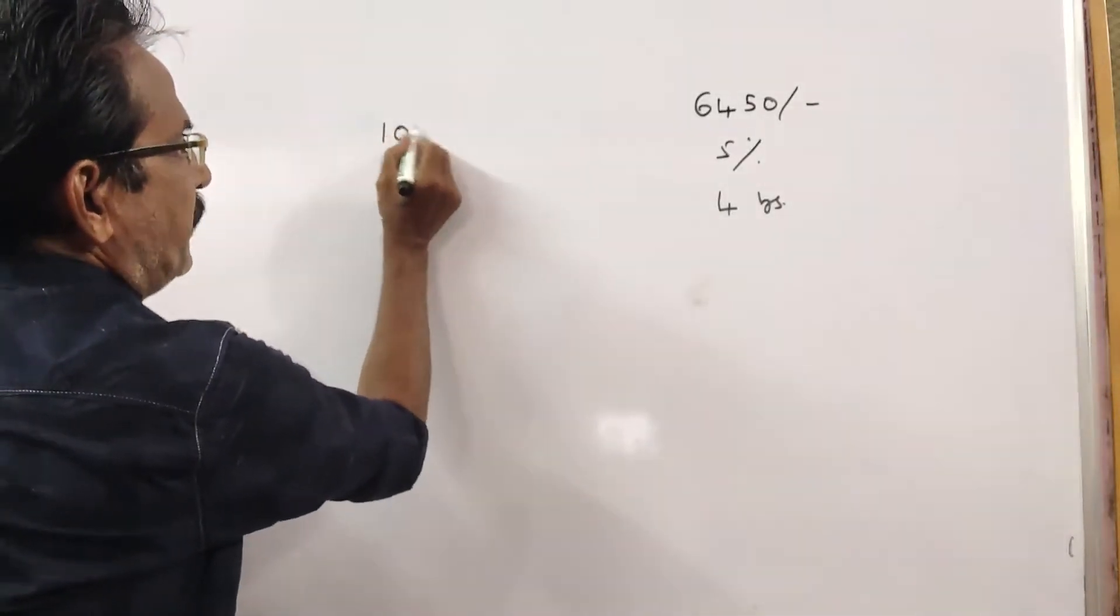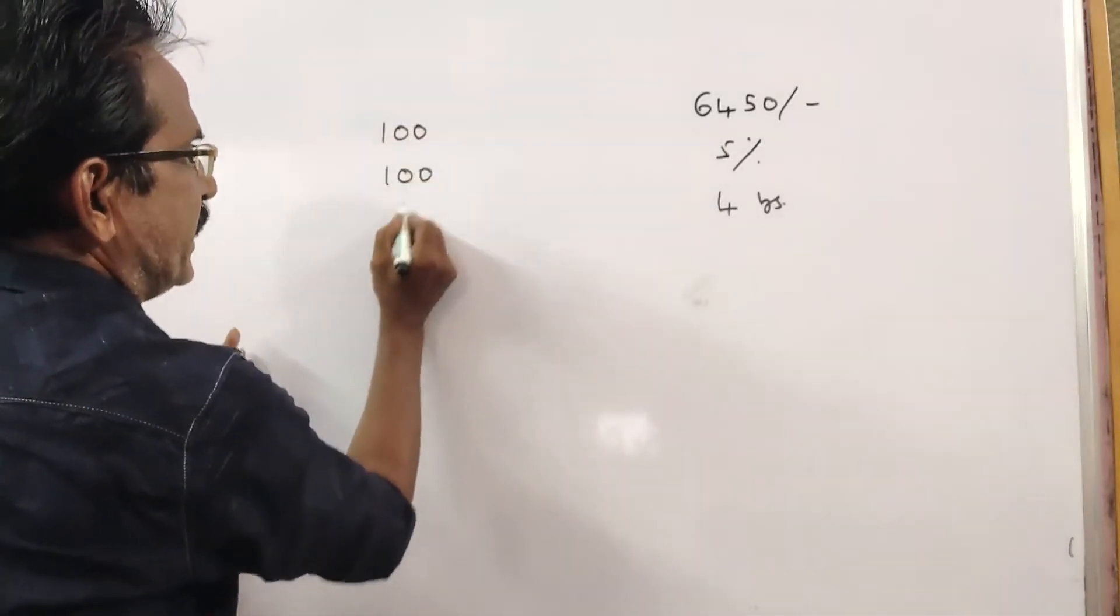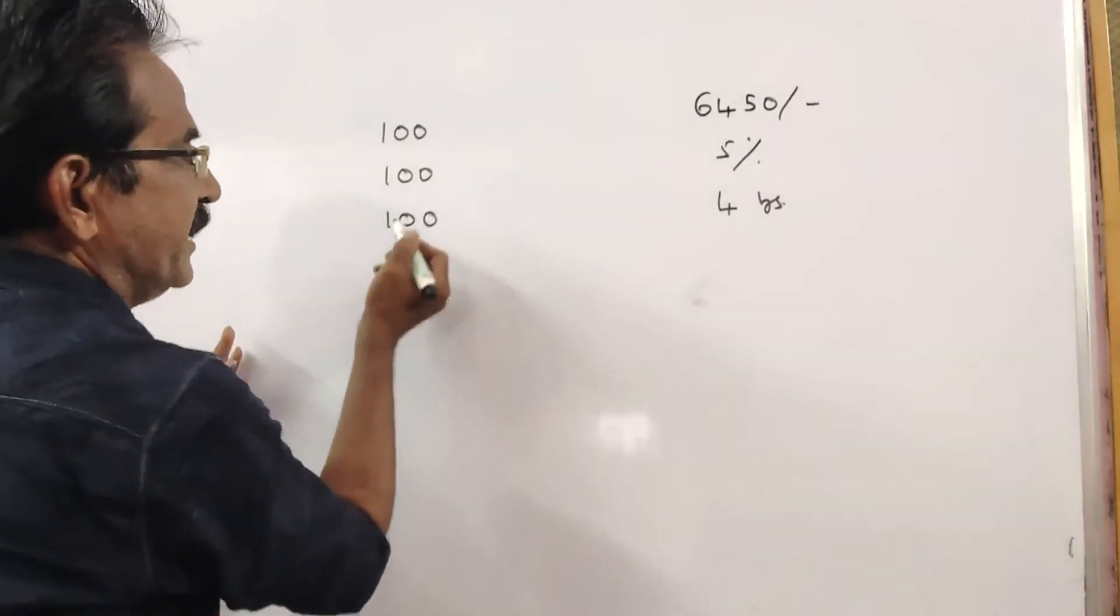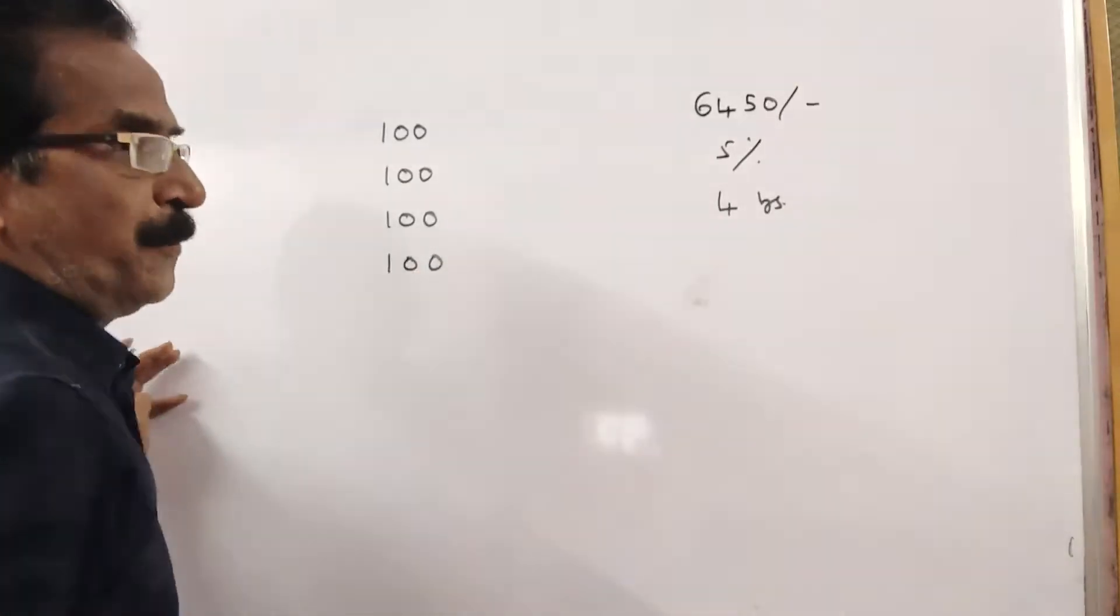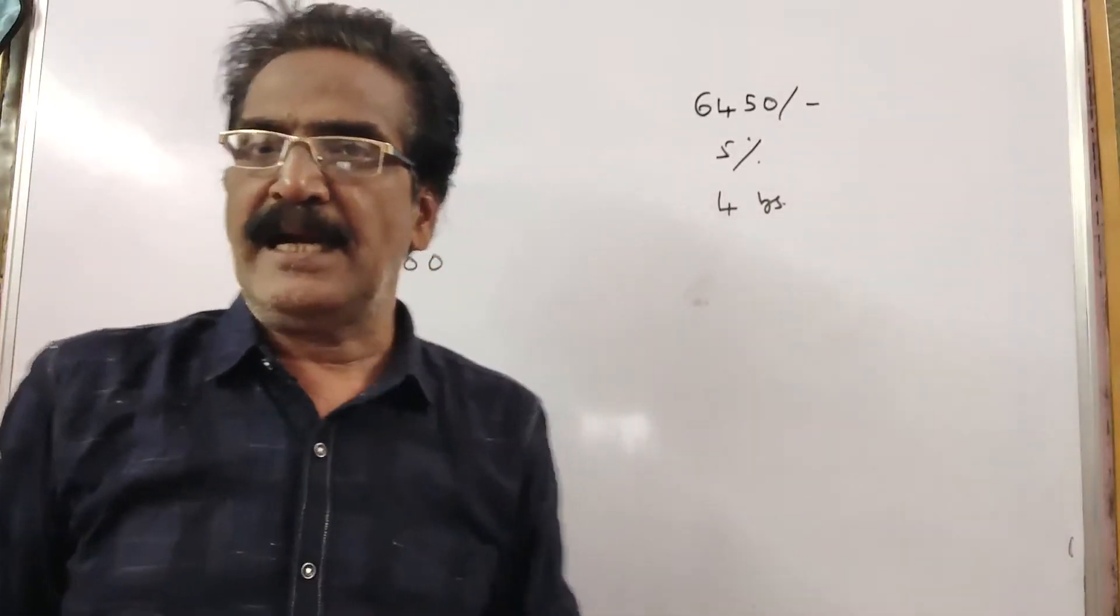At the end of the first year, you pay Rs. 100, at the end of the second year, you pay another Rs. 100, at the end of the third year, you pay another Rs. 100, and at the end of the 4 years, you pay the last installment of Rs. 100.